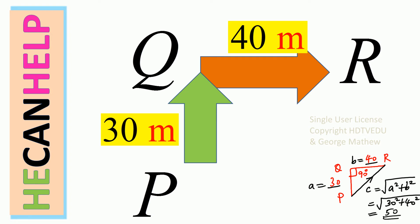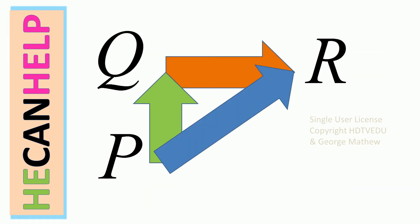The square root of 2,500 is 50. So C is 50. The hypotenuse is 50 meters. Therefore, the displacement from P to R is 50 meters.